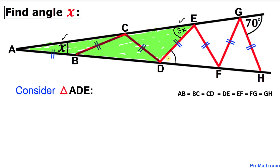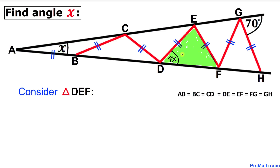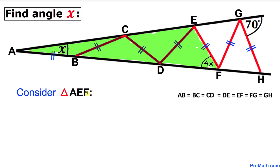Now let's consider triangle DEF — this is once again an isosceles triangle. So if this angle is 4X, this angle has got to be 4X as well. Angle E is our exterior angle, so it equals the sum of the two opposite interior angles X and 4X. X plus 4X makes 5X.